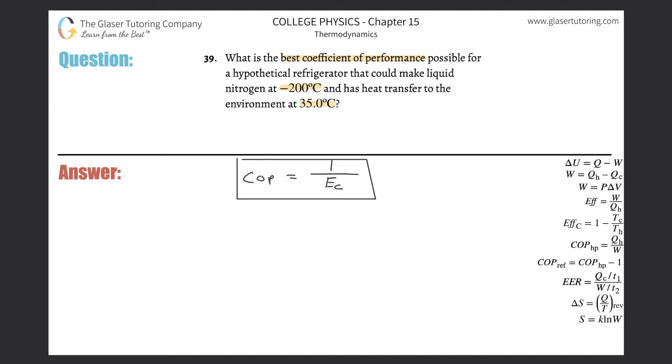Here they didn't tell me the efficiency, but they did give me two temperatures. So I'm thinking about how two temperatures relate to Carnot efficiency, and it's basically in this formula right here. So I can simply do a substitution - this is equal to the Carnot efficiency.